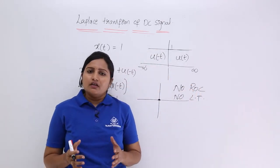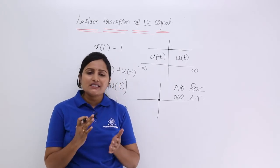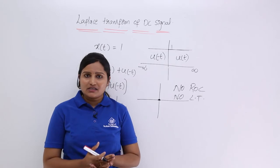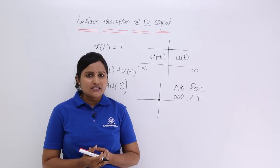So whenever they given what is the Laplace transform and ROC of DC signal we can directly see there is no Laplace transform and ROC of DC signal.